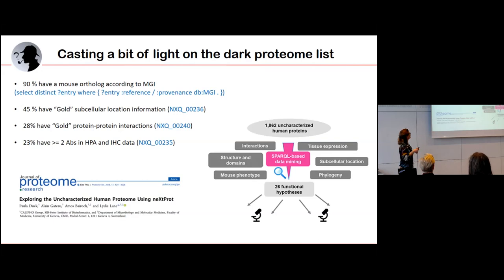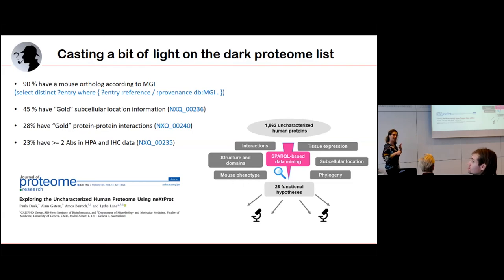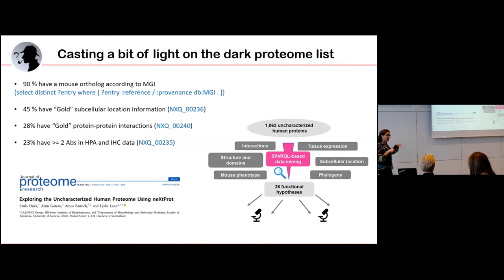Using SPARQL queries on those proteins, we found that 90% of the unknown proteins have an ortholog in mouse, and many have mouse knockouts — so mining that information may give clues to human function. Half of them have subcellular localization information, a third have protein-protein interaction data, and 25% have tools to study them — at least two antibodies available in HPA, plenty of expression data, and so on. We manually went through those proteins one by one using all these queries, and in the end proposed functional hypotheses for 26 of them. These hypotheses now need to be experimentally verified before they can be annotated.